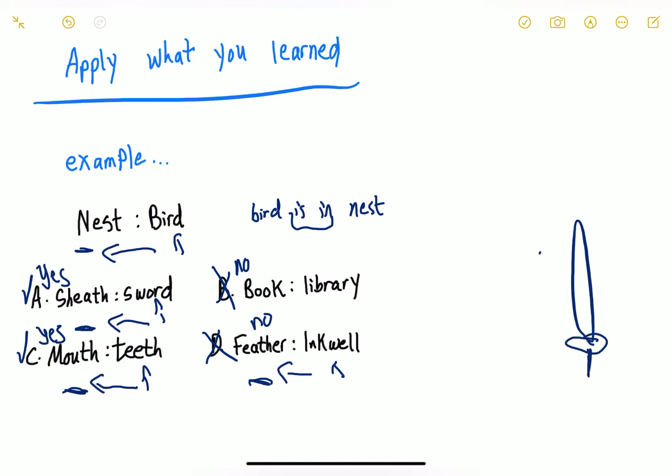We know that a sword goes in a sheath, and then you have mouth and teeth. What is the difference between these two relationships? The difference is that when you put a sword in the sheath, you can take it in and out all the time. The teeth stay in a mouth; you can't take it out of the mouth unless it breaks. So the closest relationship to the bird in the nest is the sword and the sheath, because a bird can go in and out of the nest, likewise the sword can go inside the sheath and out.